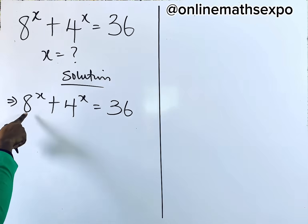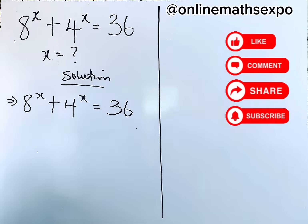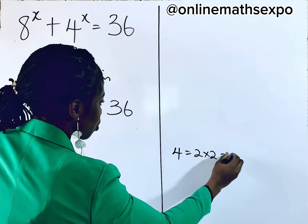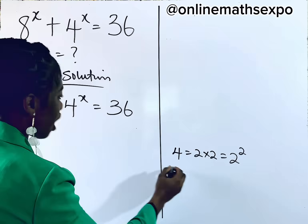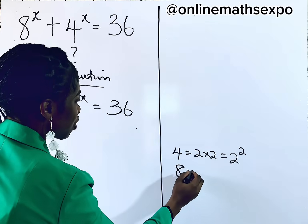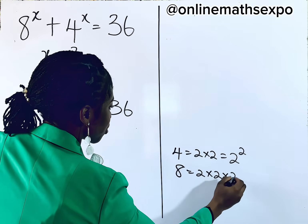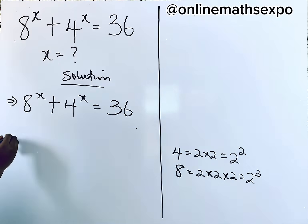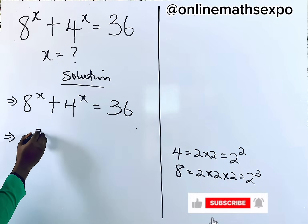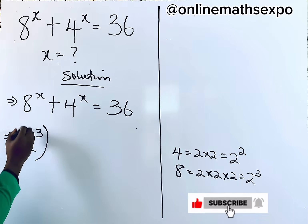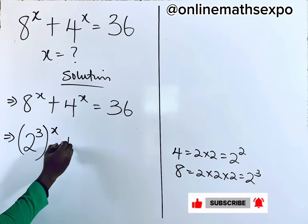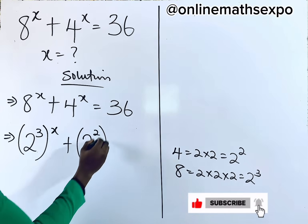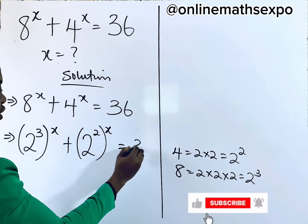We can choose to express this 4 and 8 to a common base. We know that 4 is 2 times 2, which is 2 to the power of 2, and 8 is 2 times 2 times 2, which is 2 to the power of 3. So to simplify this, we are going to have (2³)^x plus (2²)^x is equal to 36.